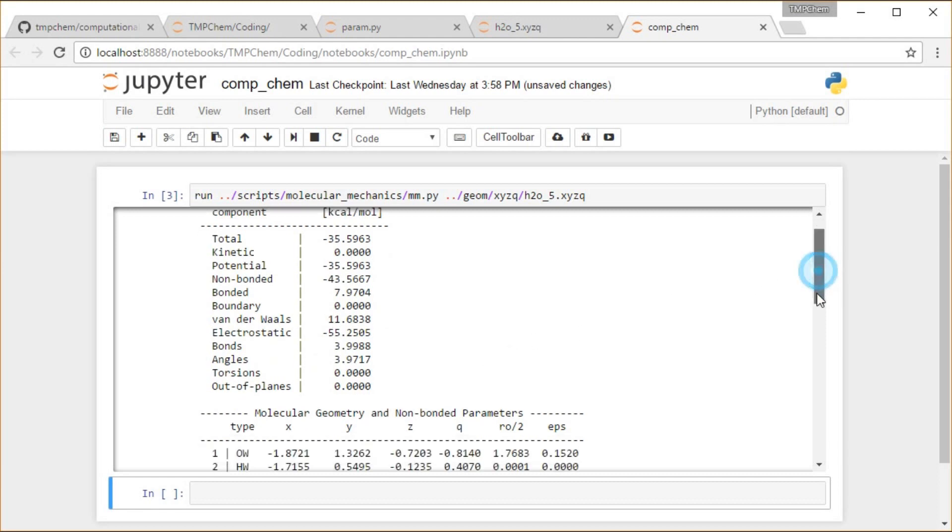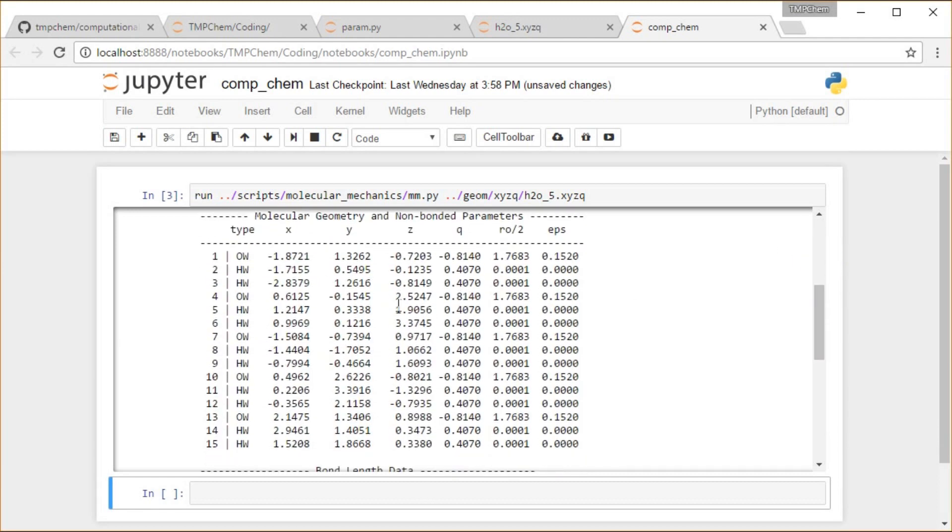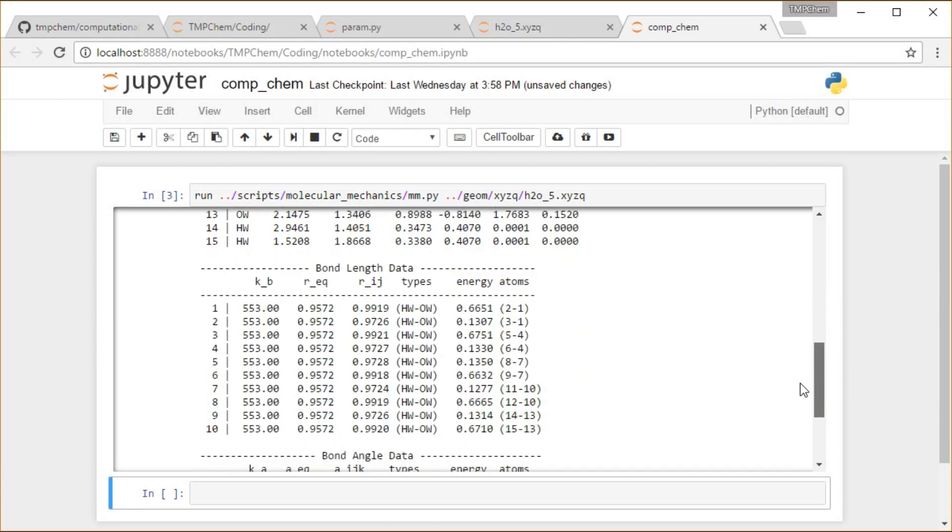We have the geometry of these five water molecules here. If you open up this XYZ file for these, they actually are arranged, the five of them, in kind of a circular ring.